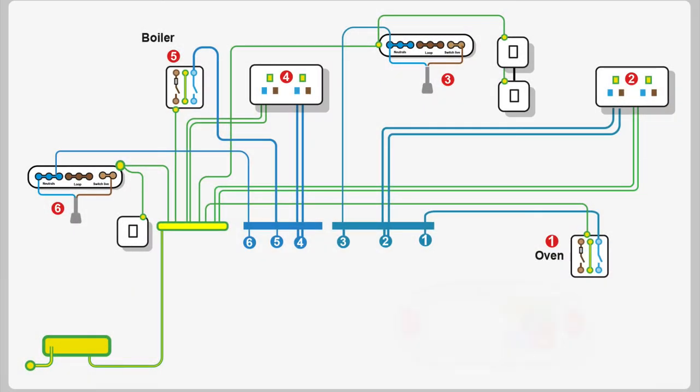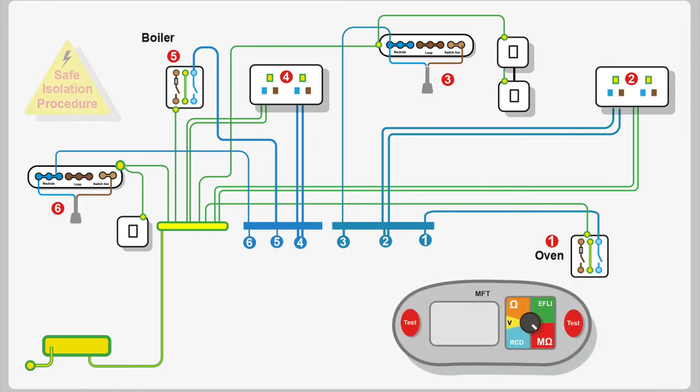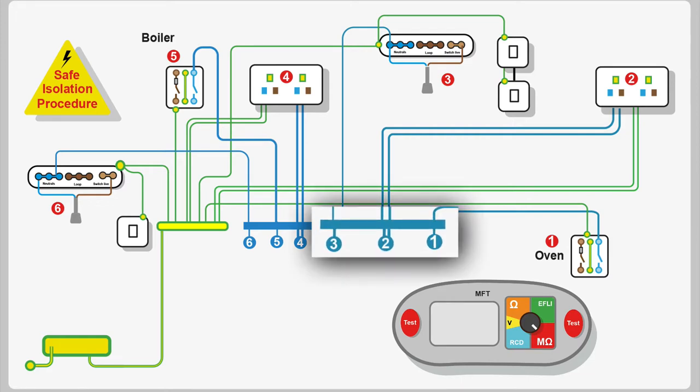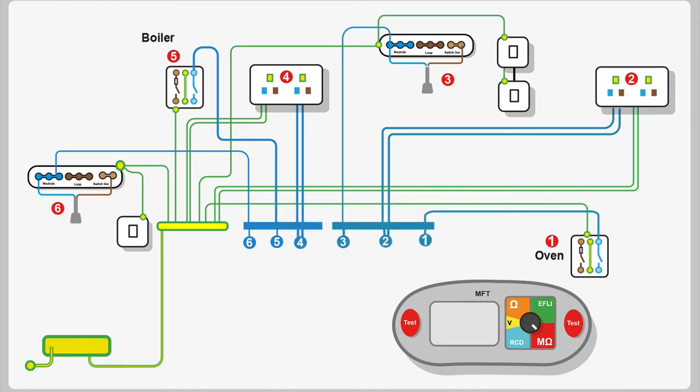Here we're going to do an insulation resistance test between the neutrals and CPCs for circuits 1, 2, and 3. Circuits 1, 2, and 3 are all on the same neutral bar. We can do this two ways. We can disconnect each neutral 1, 2, and 3 and test each one individually, or we can keep them connected together and test all three circuits to earth. Don't forget we've tested these cables before when we initially installed them. If we test all three together and get perfect results, we're okay. If we start getting results that aren't perfect, we would then disconnect the neutrals and test them individually to earth.